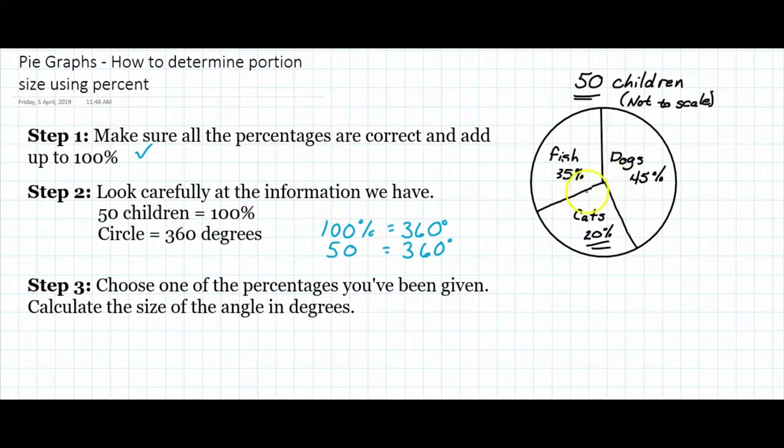Let's take an easy one and we'll take 20%. So 20% is basically 20 over 100, and we multiply that by 360 because we're trying to work out how many degrees this portion of the pie graph will be.